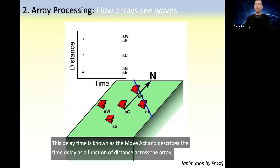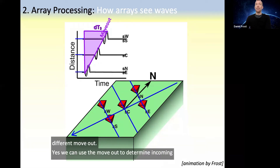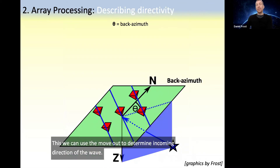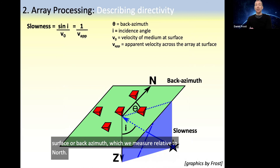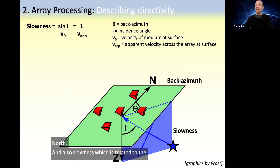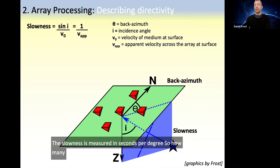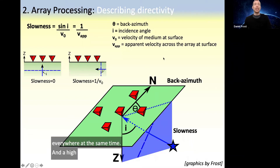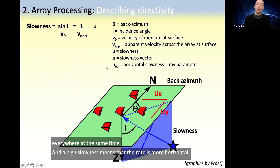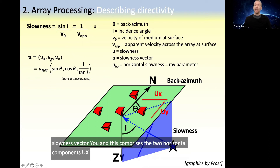This delay time is known as the moveout and describes the time delay as a function of distance across the array. A wave coming from a different direction would have a different moveout. Thus, we can use the moveout to determine the incoming direction of the wave. This direction is defined both in terms of direction on the surface — or back azimuth, which we measure relative to north — and also slowness, which is related to the incidence angle and the apparent seismic velocity across the array. Slowness is measured in seconds per degree: zero slowness means the ray is vertical and arrives everywhere at the same time, while a high slowness means the ray is more horizontal. The slowness and back azimuth can be expressed as the slowness vector u, which comprises the two horizontal components ux and uy, and the vertical component uz.